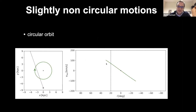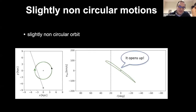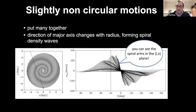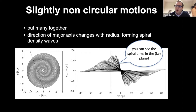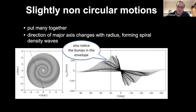Now we need to understand the effects of non-circular motions on the LV plots. Starting with slightly non-circular motions: a circular orbit traces a line in the LV plane. As you make it slightly non-circular, it opens up. When you put many of these slightly non-circular orbits together with the major axis changing with radius, what you get in the LV plane is a very prominent structure. Although the spiral arms are relatively weak in physical space, in the LV plane they become very strong — you are actually looking at the spiral arms of the Milky Way directly.